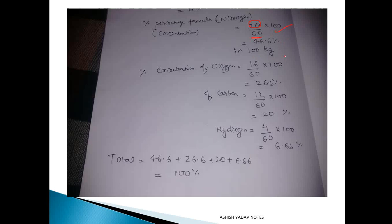Now in the same way you can calculate the concentration of oxygen also: 16 by 60, and you will get 26.6. Same way you can calculate carbon also: 20 percent. And same way you can calculate hydrogen. So now the last thing is how to check if you have got the right answer.